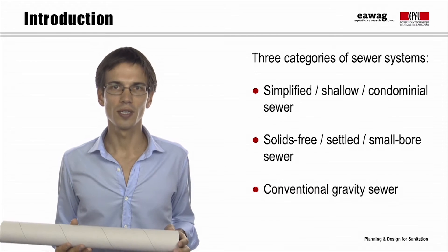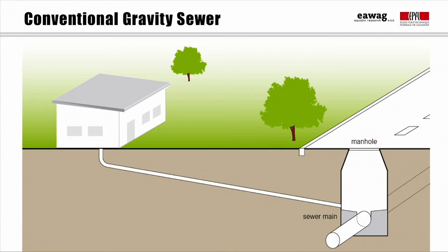The best-known system is the conventional gravity sewer. Conventional gravity sewers are large networks of underground pipes that convey black water, grey water, and in many cases storm water, from the houses to the wastewater treatment plant, using gravity and often pumping stations. The sewer is designed so that it maintains self-cleansing velocity, which means guaranteeing a flow that will not allow particles to accumulate.